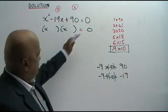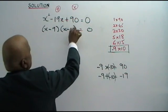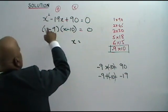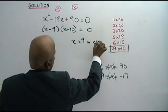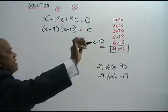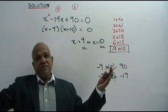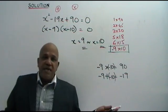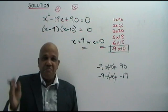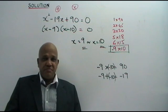We transfer these two numbers into the brackets: x minus 9 times x minus 10 equals 0. Therefore x equals 9 or x equals 10. These are your answers — as simple as that. This is only the beginning of the quadratic equation; there are many more parts to come, and I'm sure you can master all of them. Thank you.